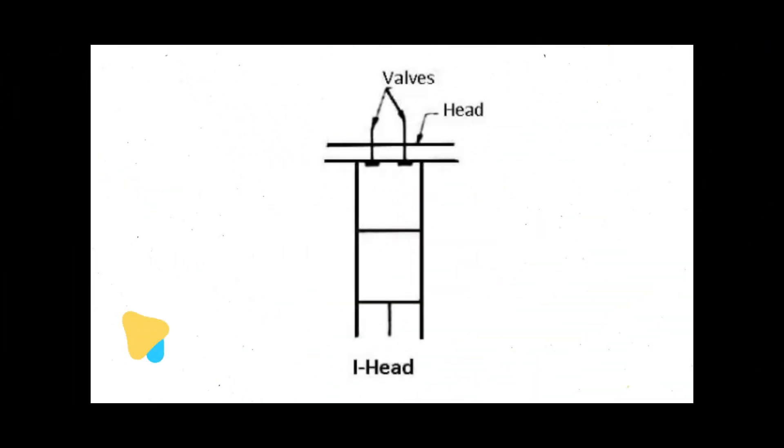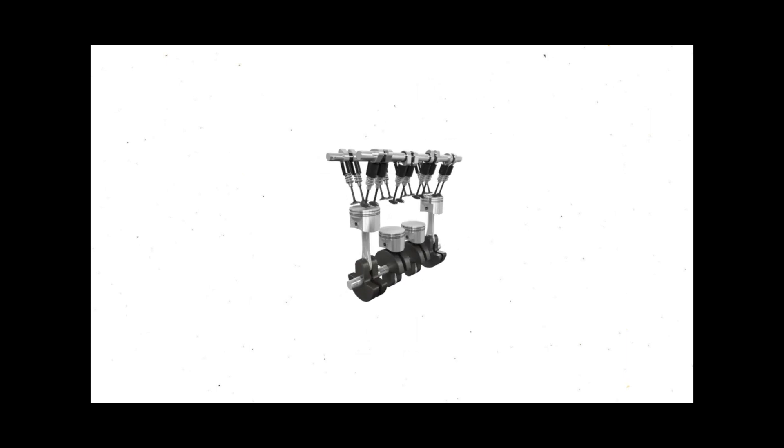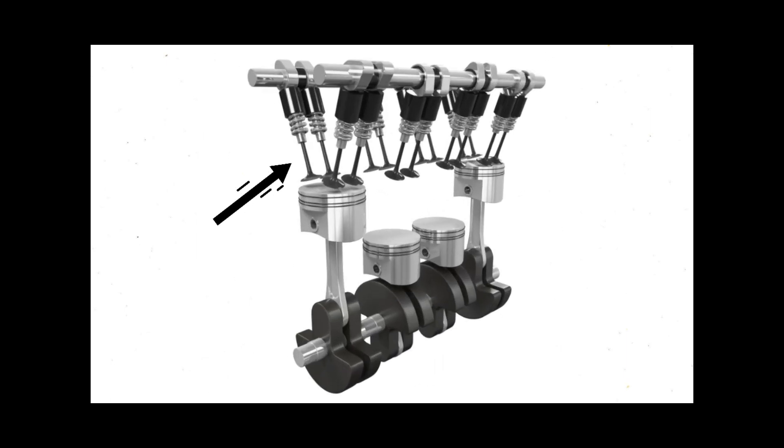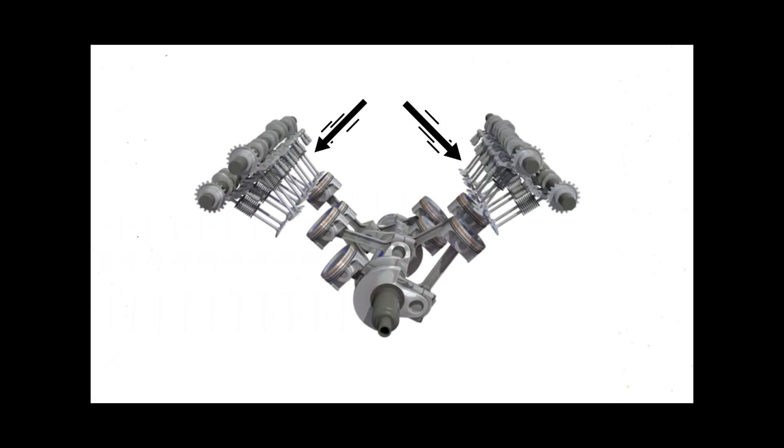In I-head or overhead valve engine, the valves are located in the cylinder head. Inline engines usually have the valves in a single row. V8 engines may have the valves in a single row or in a double row in each bank.